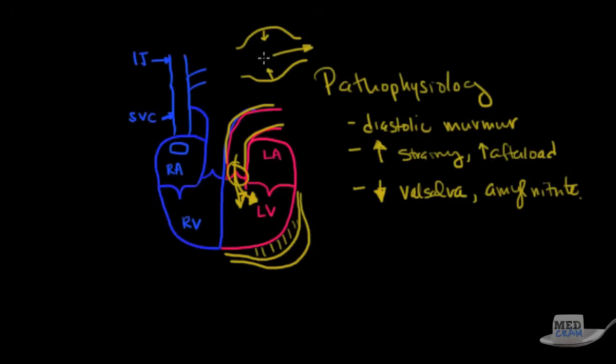However, in aortic regurgitation, instead of that blood going forward, the blood goes backwards, backwards here into the left ventricle. So you're going to get left ventricular hypertrophy, and you're going to get an increase in the left ventricular end diastolic volume.